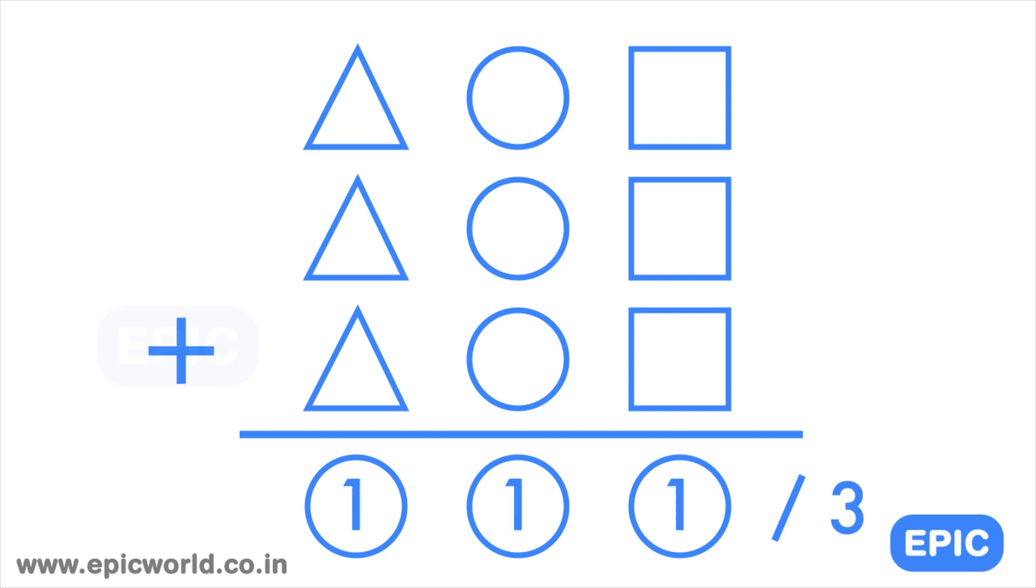So, for one one one, it will be one one one divided by three, which is zero three seven. The middle digit should be one, so not possible. For two two two, it is zero seven four. Not a solution. For three three three, it will be one one one, again not a solution. For four four four, the number will be one four eight. Now the middle digit is four so it fits the bill.